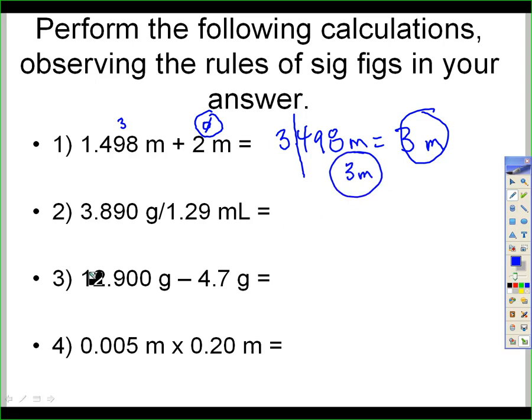I'm going to apply the same rule for number 3. So here I have 3, here I have 1, so my least number is 1 decimal place. Punching this in my calculator, 12.900 minus 4.7 gives me 8.2. And luckily enough, I get 1 decimal place, and it came out exactly at 8.2, so I can just keep it.